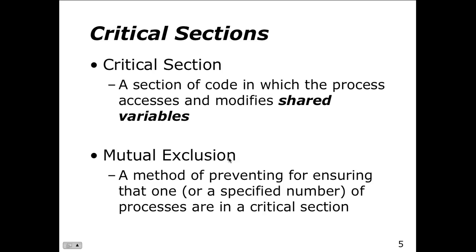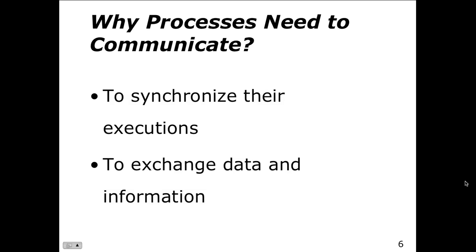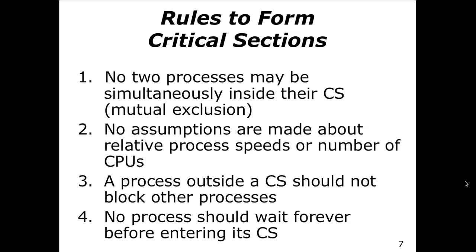Then we have the concept of mutual exclusion — only one process at a time can access the critical section. If more than one process tries to access the critical region, they'll be blocked. Why do processes need to communicate? To synchronize their executions, to exchange data and information. Rules for the critical section: no two processes may simultaneously be inside the critical region, no assumptions are made about relative process speeds or number of CPUs, and processes outside the critical section should not block one another.